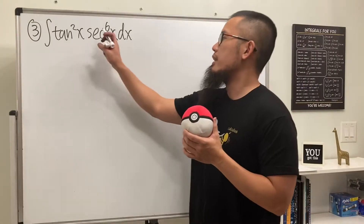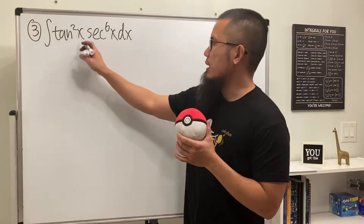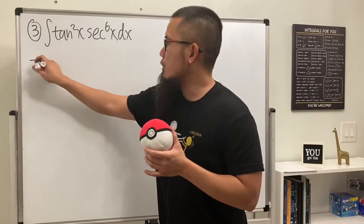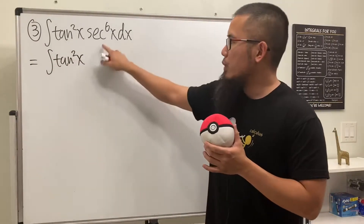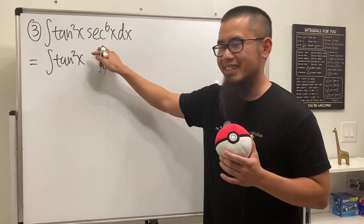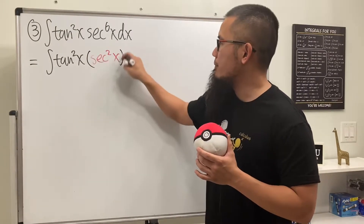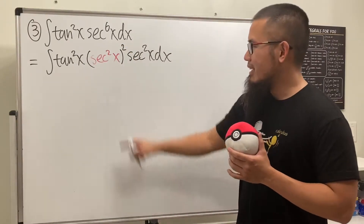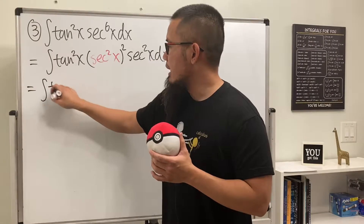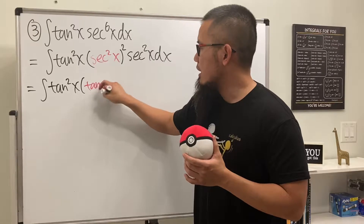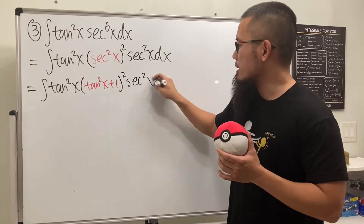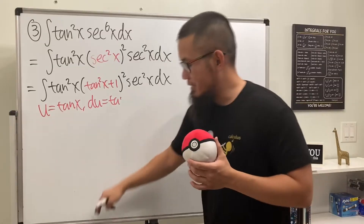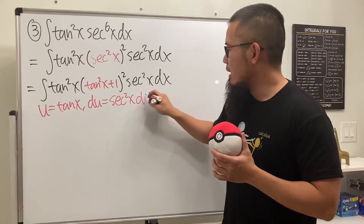Number 3 is the integral of tangent squared x times secant to the sixth power x. This is very similar to what we did earlier. We break it apart as tangent squared x times (secant squared x) squared times secant squared x dx. Then we change secant squared to (tangent squared x plus 1), giving us tangent squared x times (tangent squared x plus 1) squared times secant squared x dx. Let u equal tangent x; du equals secant squared x dx.